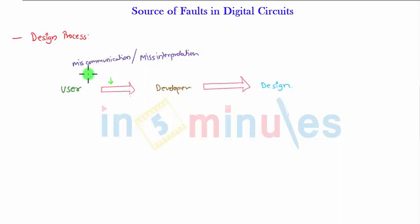Miscommunication is from the user side - they might have not communicated properly. Misinterpretation is from the developer side. Through this, what will happen? The coding or implementation will go wrong. The developer is coding, but it is misinterpreted, and the developer is coding according to his way.